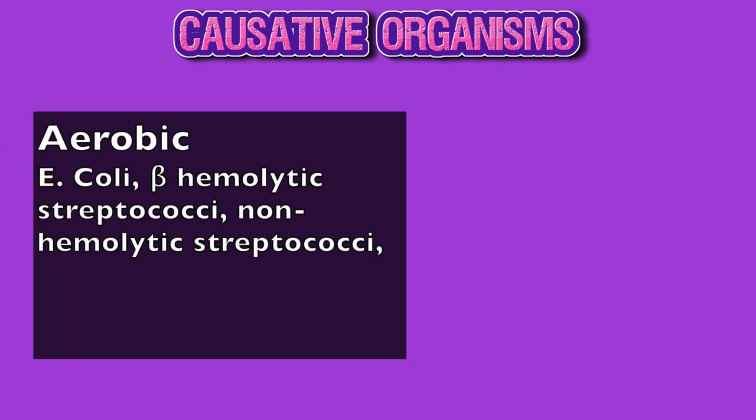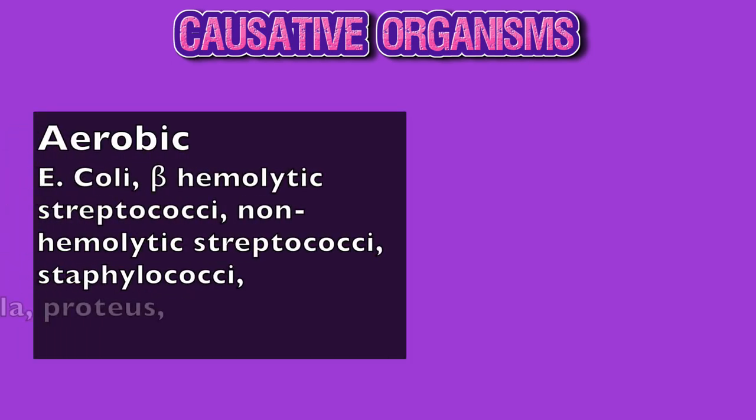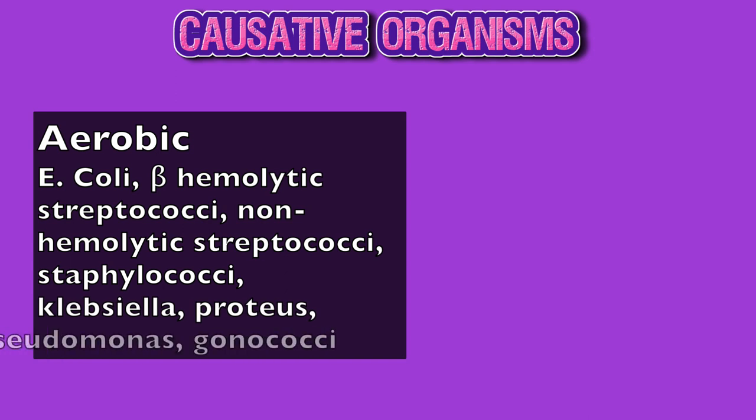Common aerobic organisms which can cause puerperal sepsis are E. coli, beta-hemolytic streptococci, non-hemolytic streptococci, staphylococci, Klebsiella, Proteus, Pseudomonas, and gonococci. Remember, Mycobacterium tuberculosis, if present earlier, can flare up after delivery.